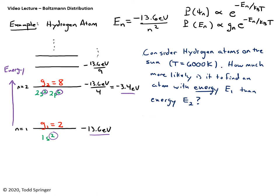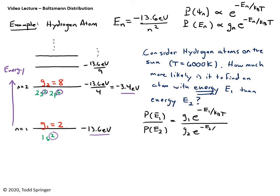Now consider a slightly different question for hydrogen atoms on the Sun at 6000 Kelvin: how much more likely is it to find an atom with energy E1 than energy E2? Previously I compared particular states; now I want the ratio P(E1) over P(E2). For this, I must account for degeneracy: G1 times e to the minus E1 over k_B T, divided by G2 times e to the minus E2 over k_B T.